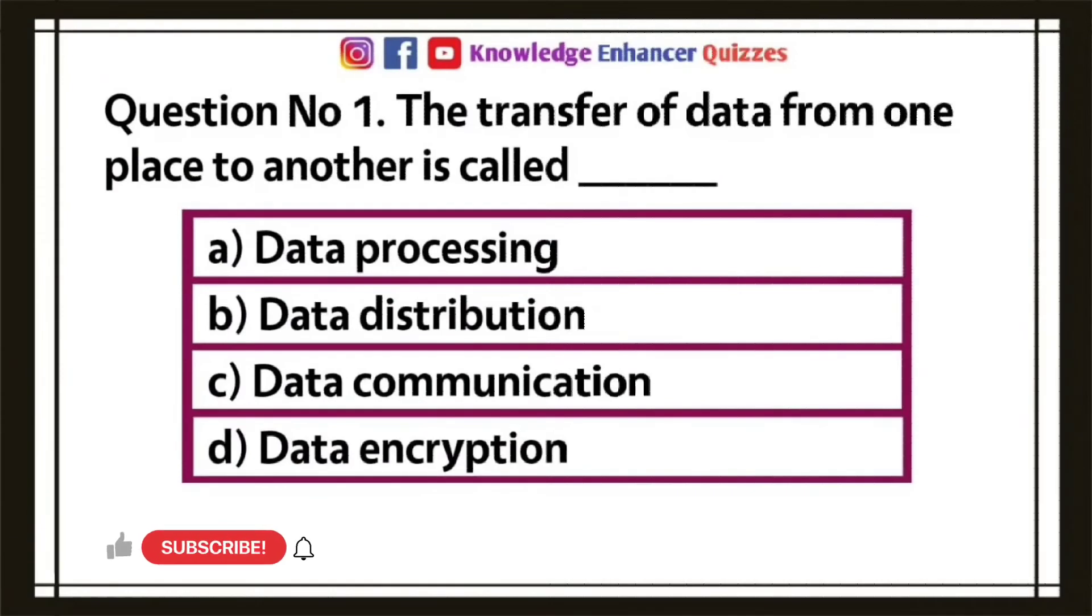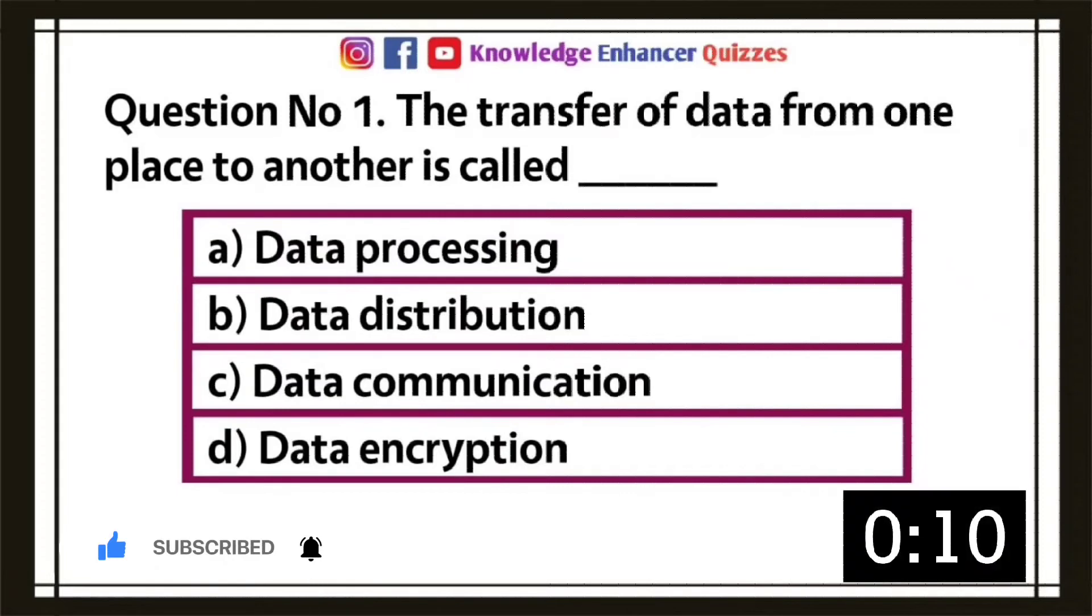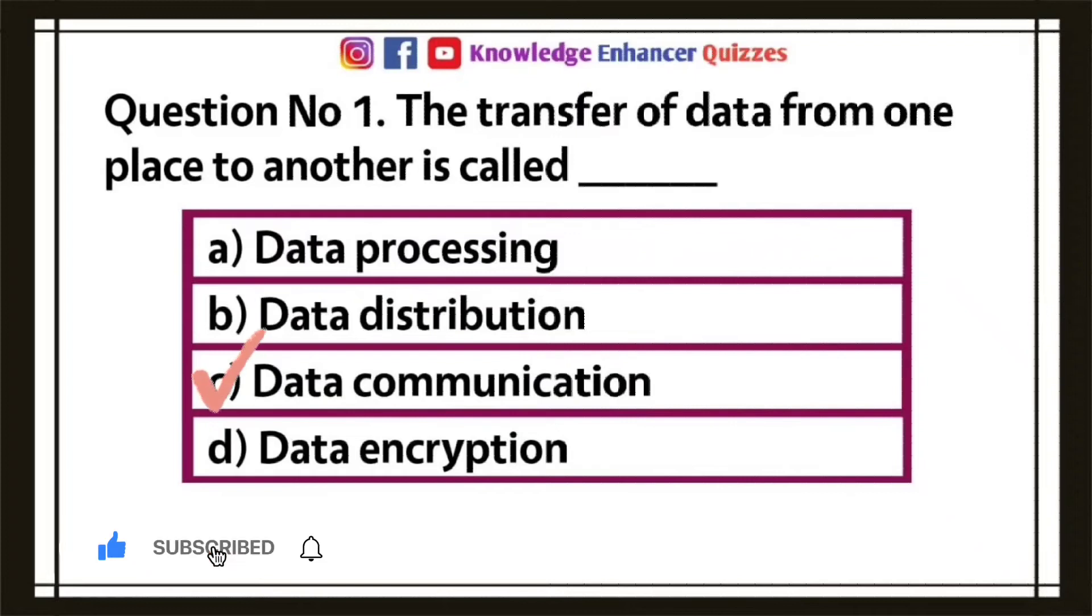Question number one, the transfer of data from one place to another is called: A, data processing; B, data distribution; C, data communication; D, data encryption. Option C is the right answer.